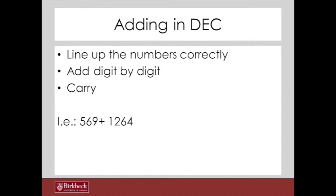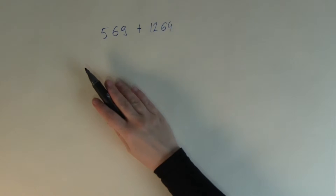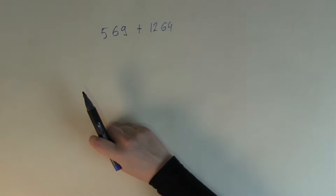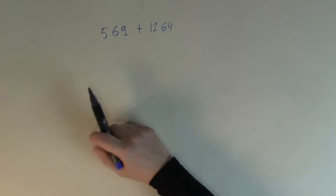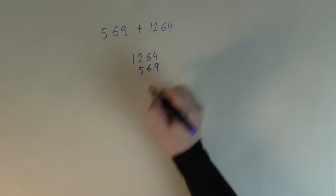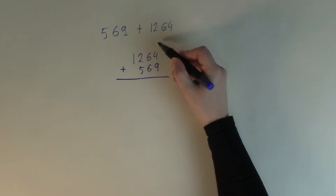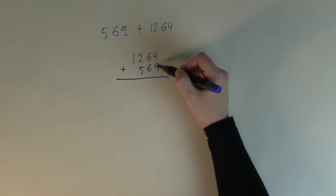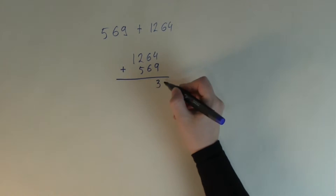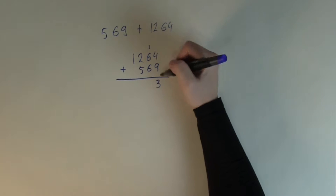For example, if you had to add together 569 plus 1264, I always like to put the longer number at the top, so I'm going to start with 1264 at the top and 569 at the bottom, putting the addition sign here so I don't forget that I'm actually adding. Starting from the smallest place value: 4 plus 9 makes 13, so I'm only recording the 3 — which is the units digit — and I carry 1 over to the tens column, because 13 is 1 ten and 3 units.